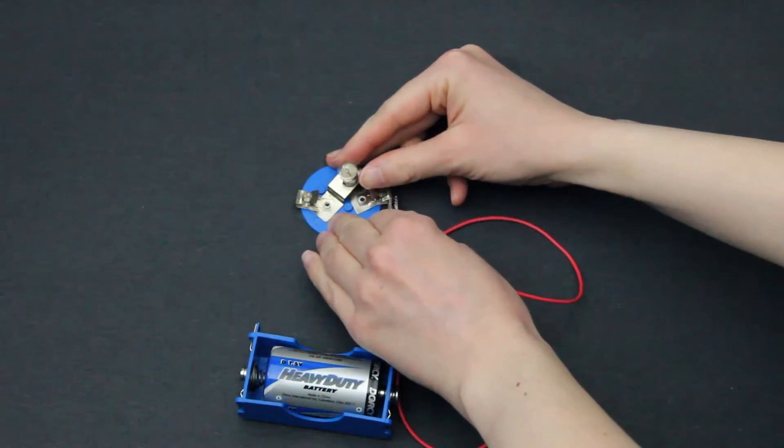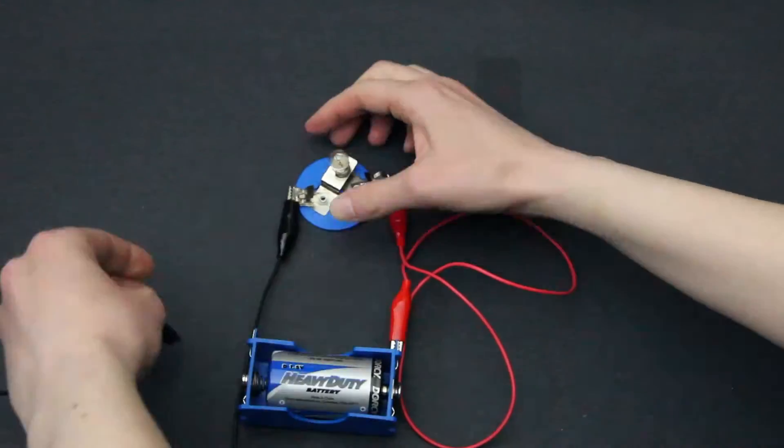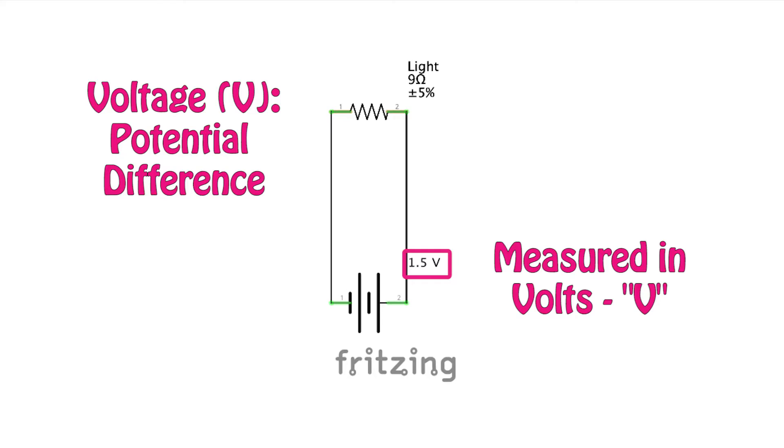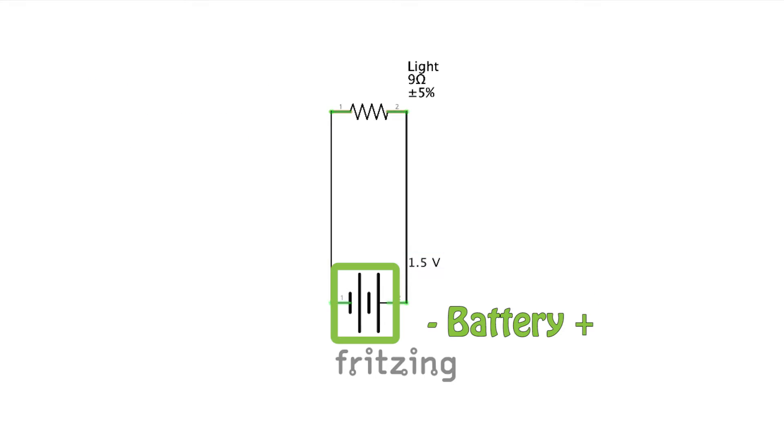A battery is an imbalance of charge. When we make a path from the positive side of the battery to the negative side, electrons start to shift. Measure voltage in volts and represent batteries on wiring diagrams with this symbol.